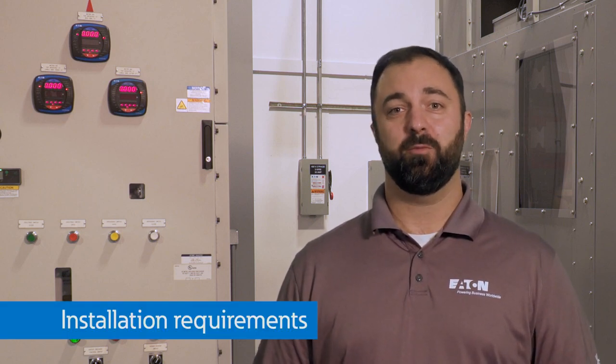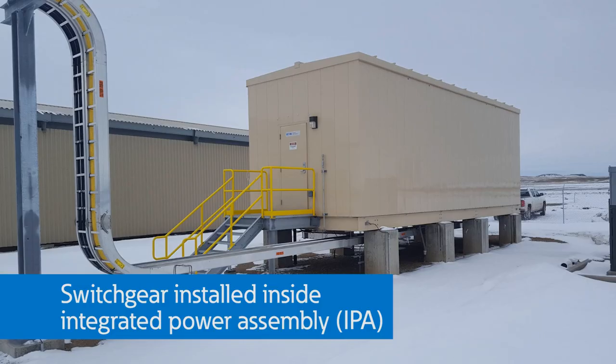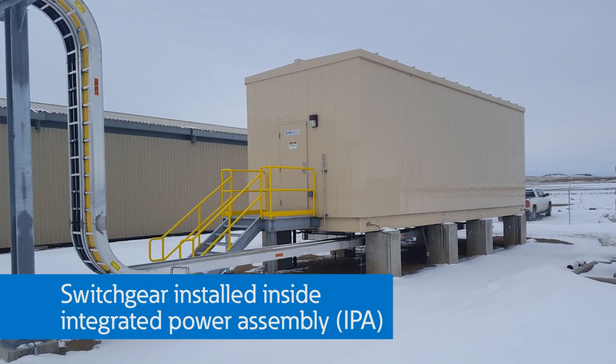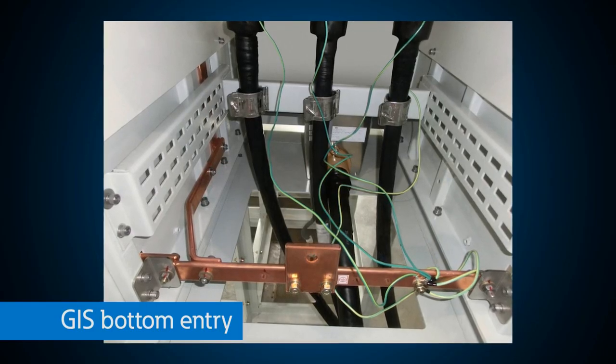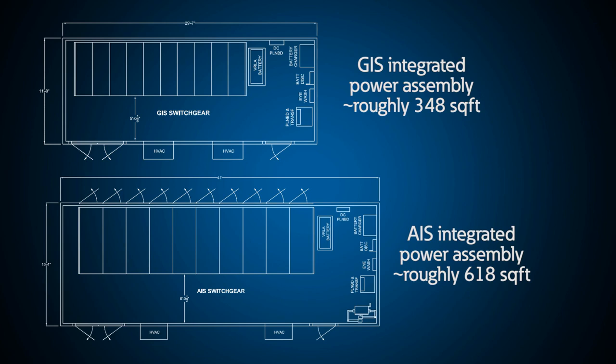We have discussed footprint and control power requirements. Now let's look further into installation requirements. Medium voltage AIS switchgear can have incoming voltage brought via cables or bus duct in the top, bottom, or side of the assembly. Whether your installation is in an integrated power assembly, over a cable vault, or installed on a concrete slab, an AIS lineup provides you with flexibility in your design. GIS switchgear is typically bottom entry for cabling and does not allow for traditional bus duct to be used. While AIS presents more incoming and outgoing connection options than GIS, GIS is front accessible, allowing the switchgear room to be decreased in size not only by having a smaller footprint but also by eliminating the need for rear access cable requirements.